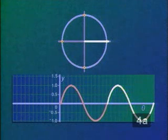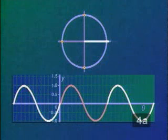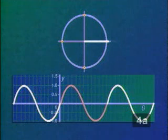If the terminal arm rotates in a negative or clockwise direction from 0 to negative 2 pi radians, we see the same pattern appear between negative 2 pi and 0.